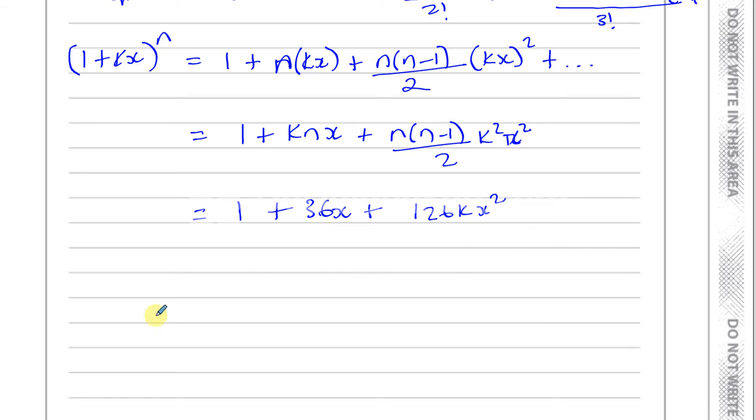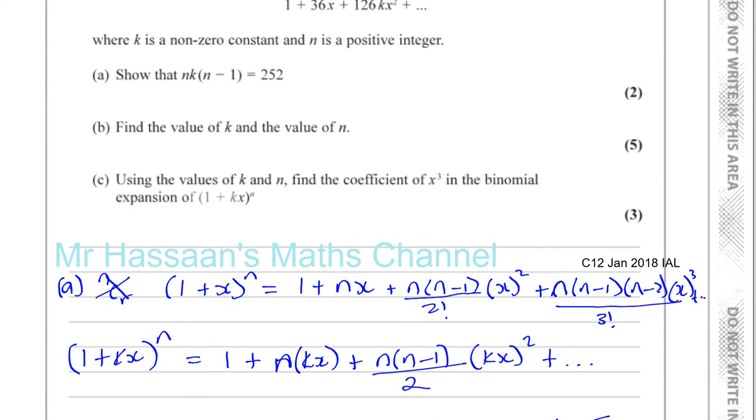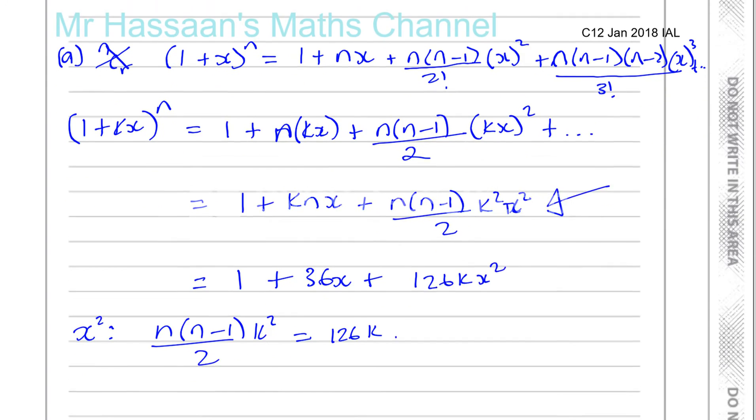So they've asked us to show that nk times n minus 1 equals 252. So basically, if we compare the coefficient of x squared, okay, compare the coefficients of x squared, we can see that for the expansion, you get n times n minus 1 over 2 times k squared is equal to 126k.